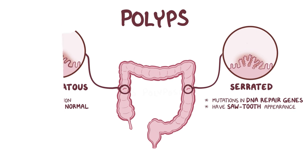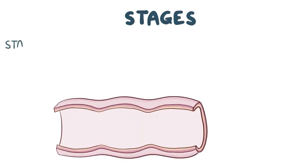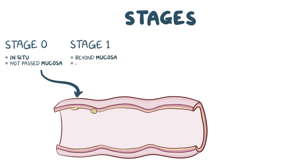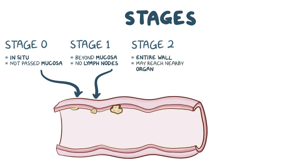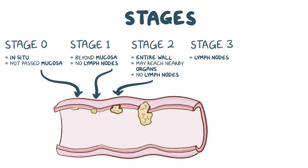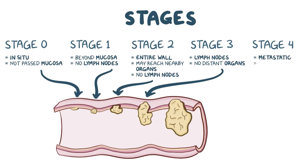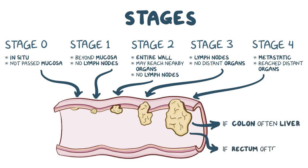When tumors become cancerous, they can be categorized into stages. Stage 0 is carcinoma in situ, meaning the tumor has not grown beyond the mucosa. Stage 1 is when the tumor has grown beyond the mucosa but has not spread to lymph nodes or distant organs. Stage 2 is when the tumor has invaded the whole colonic or rectal wall and may have reached nearby organs or tissues, but still has not spread to lymph nodes or distant organs. Stage 3 is when the tumor has spread to lymph nodes but still hasn't spread to distant organs. Finally, stage 4 is metastatic, meaning the tumor has spread to distant organs. The most common site of metastasis for colon cancer is the liver, and for rectal cancer it's the lungs.